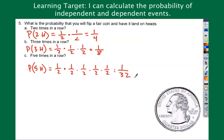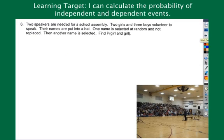Independent events are pretty easy. All right, two speakers are needed for a school assembly. Two girls and three boys volunteer. Let's get our total number of possibilities. We have five volunteers. Their names are put in a hat. One name is selected and not replaced. I want you to highlight that. Right there, that tells us this is dependent events. First step. Is it independent or dependent?